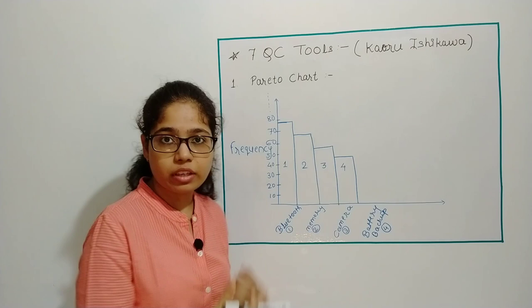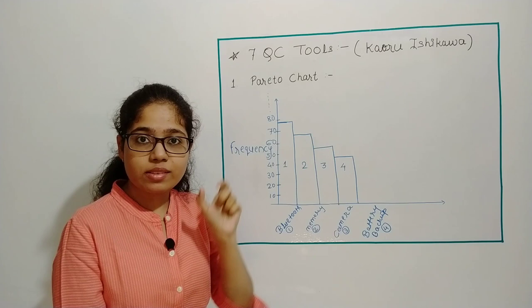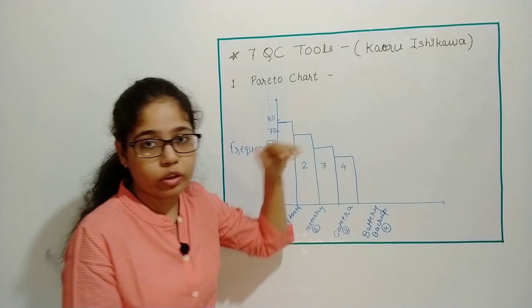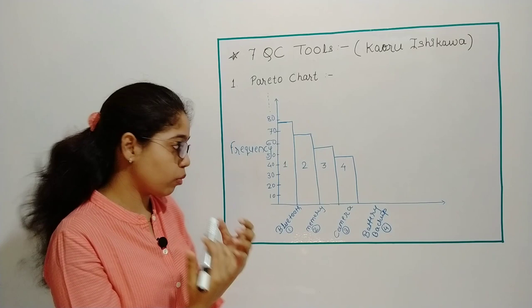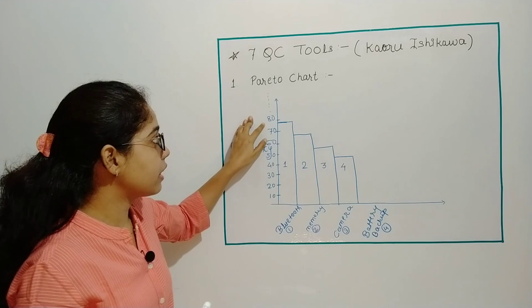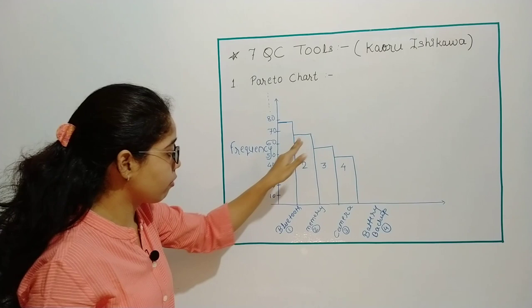Now in Pareto chart, I will arrange the defects in descending order based on which has the highest count. I will arrange the defects I received in descending order. Suppose I found that 78% of people complained about Bluetooth, likewise memory 65%, camera 55%, or battery backup 50%. These are the defects I collected.